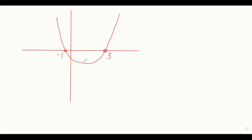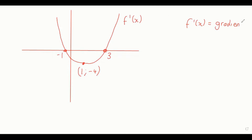If you guys are ever given a graph in an exam, and let's say this is like a three and this is a minus one, and this is a one and a minus four, for example, then let's have a look at something. They're not going to call it f of x - they're going to call it the first derivative. What we need to understand is that the first derivative is another name for the gradient of a graph. The y-values on this graph are actually the gradient of the original graph.